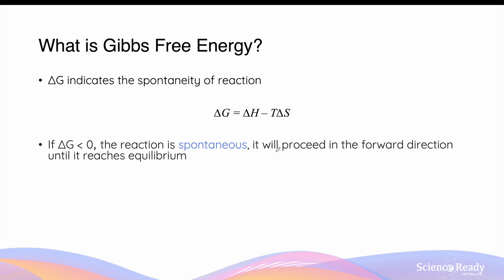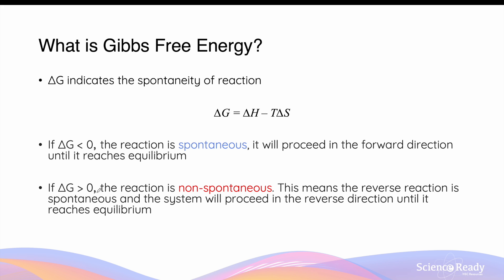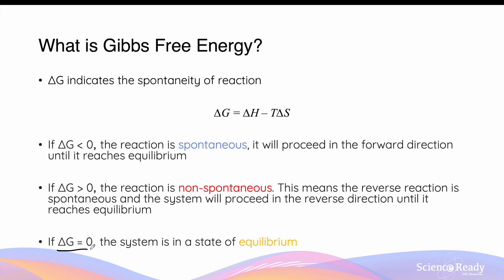A spontaneous reaction will proceed in the forward direction until it reaches equilibrium. Conversely, if the change in Gibbs free energy is positive or greater than zero, then that reaction is not spontaneous. The reverse reaction, which would have a negative ΔG, would be spontaneous, and the system will proceed in the reverse direction until it reaches equilibrium. In both cases, as the system approaches equilibrium, the value of ΔG will approach zero, and at equilibrium the change in Gibbs free energy will equal zero.